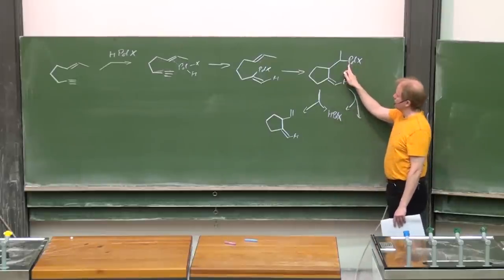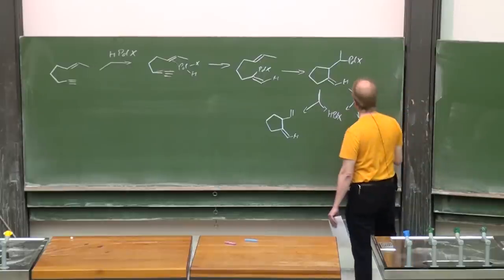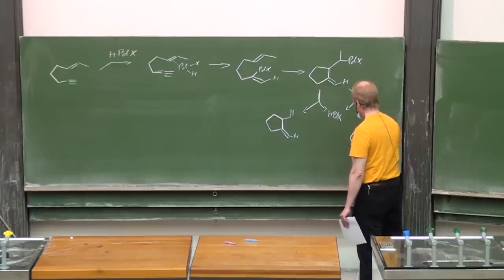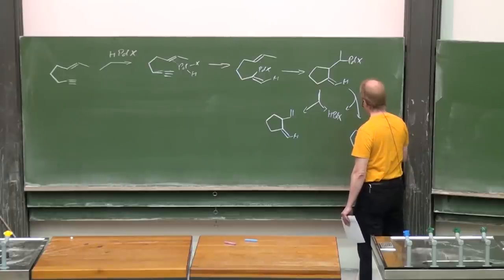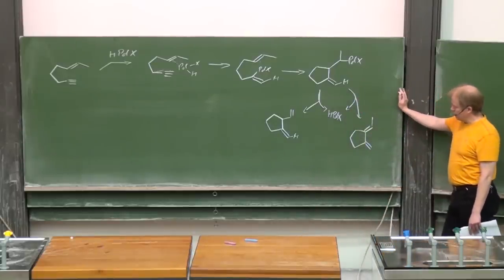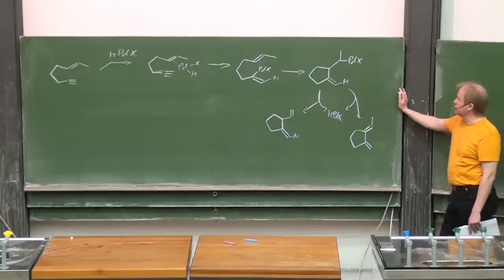On the other hand, beta-hydrogen elimination to this position will lead, of course, to the 1,3-diene, which is interesting for Diels-Alder reaction and so on.